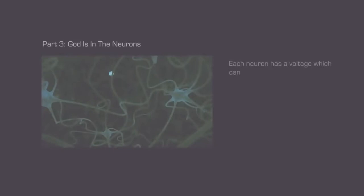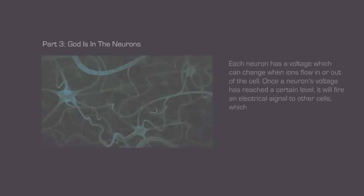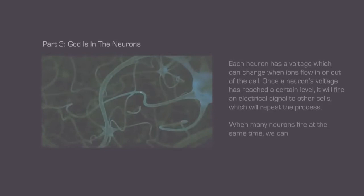Each neuron has a voltage, which can change when ions flow in or out of the cell. Once a neuron's voltage has reached a certain level, it will fire an electrical signal to other neurons, which will repeat the process. When many neurons fire at the same time, we can measure these changes in the form of a wave.